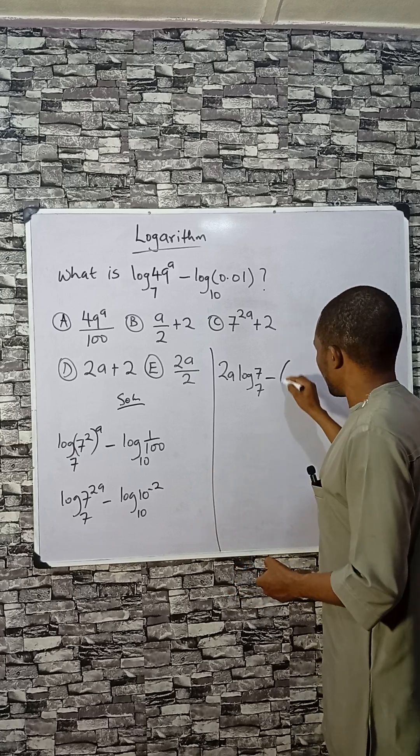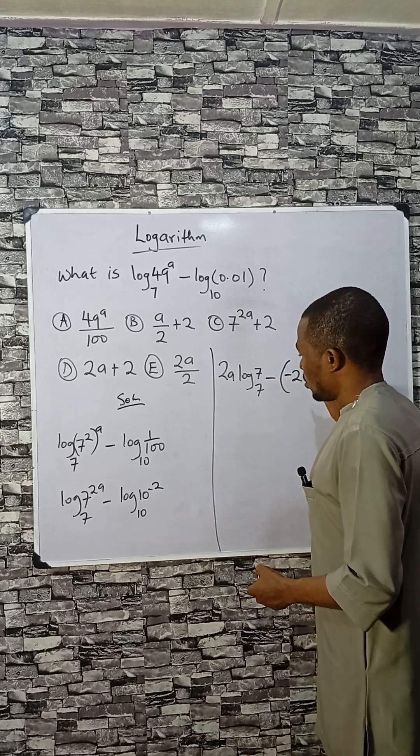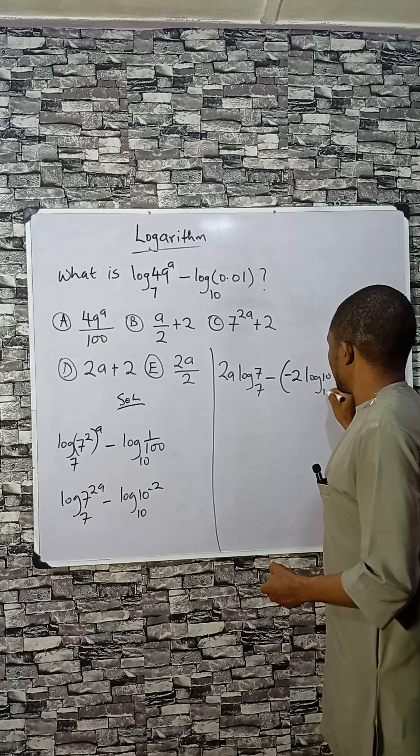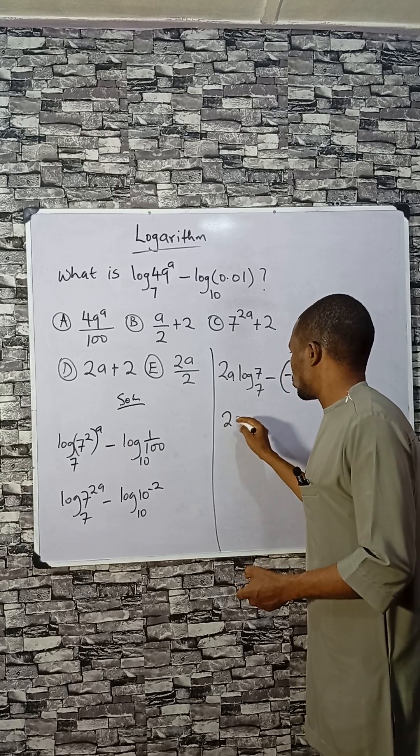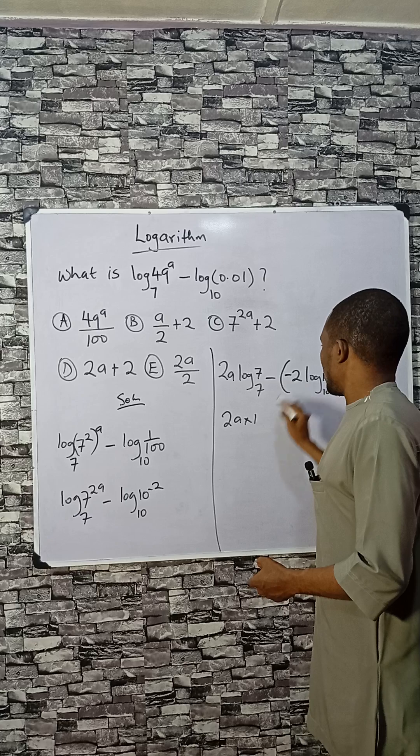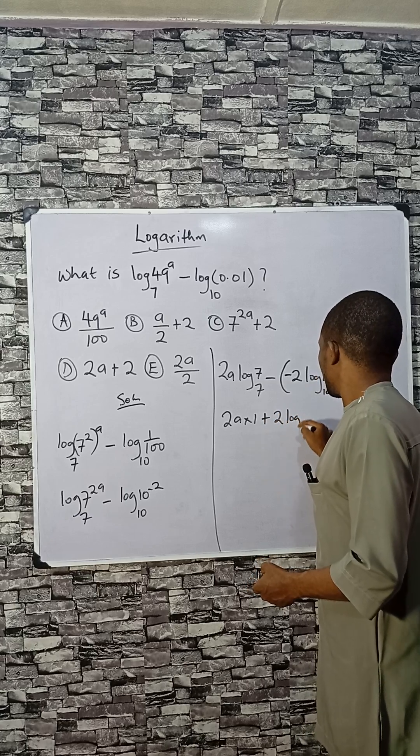Base 10, log 7 by 7 is 1, so 2a times 1 minus the minus is plus, so plus 2 log 10 base 10.